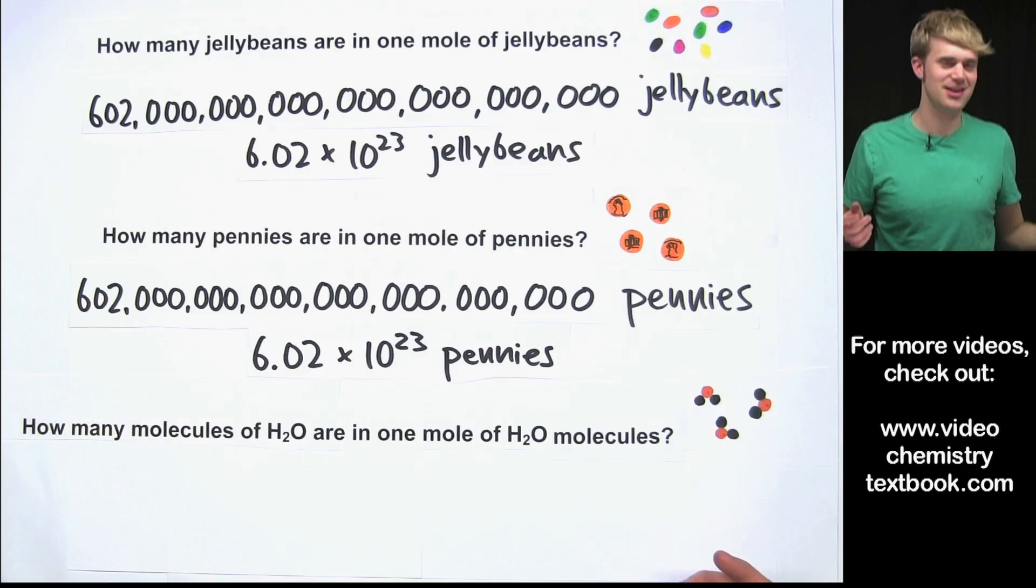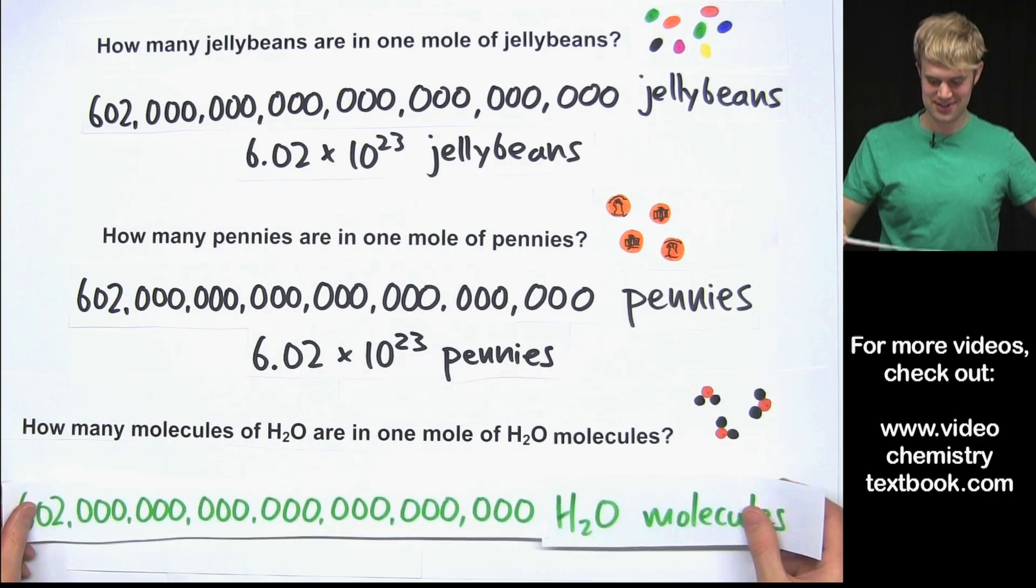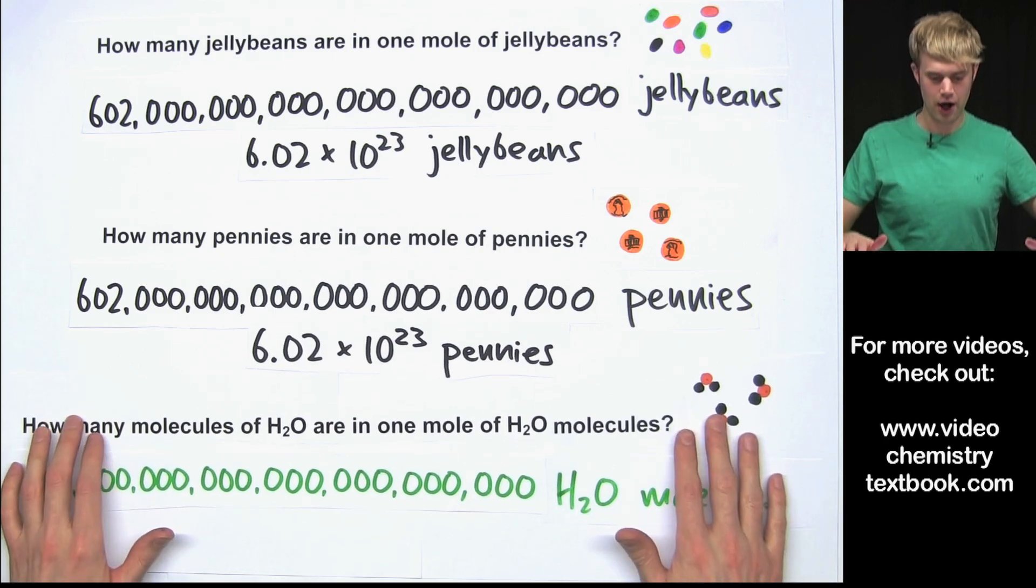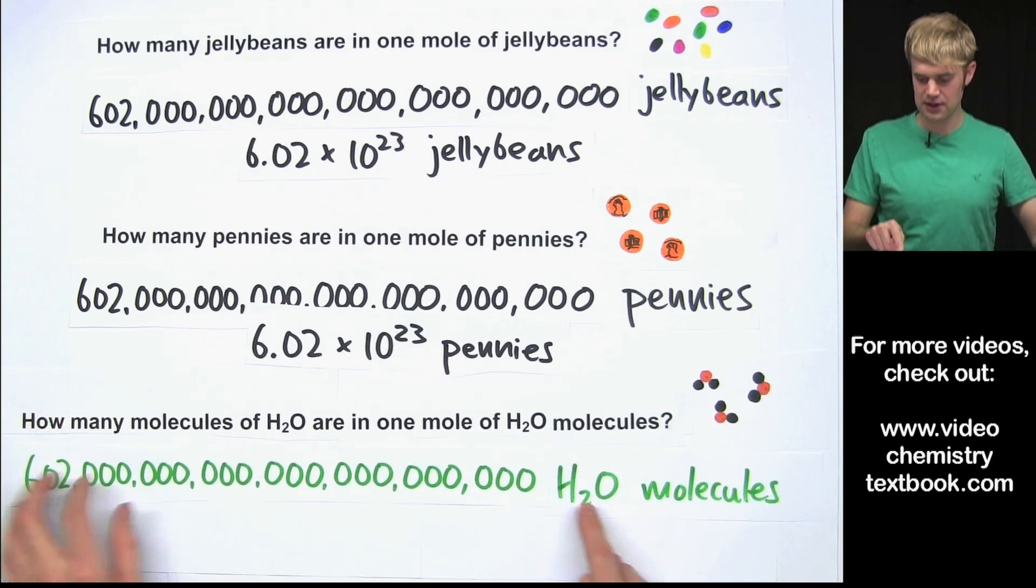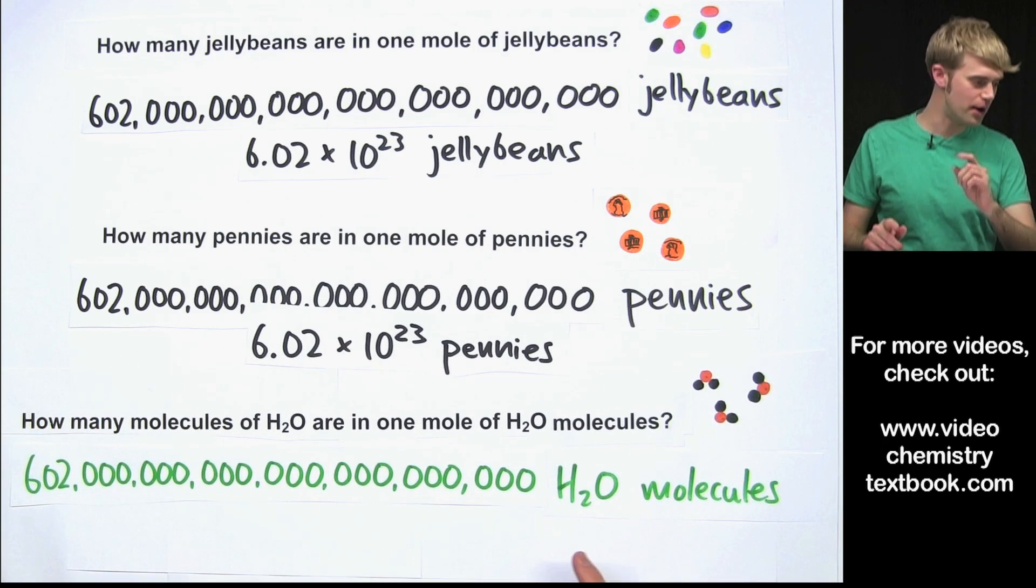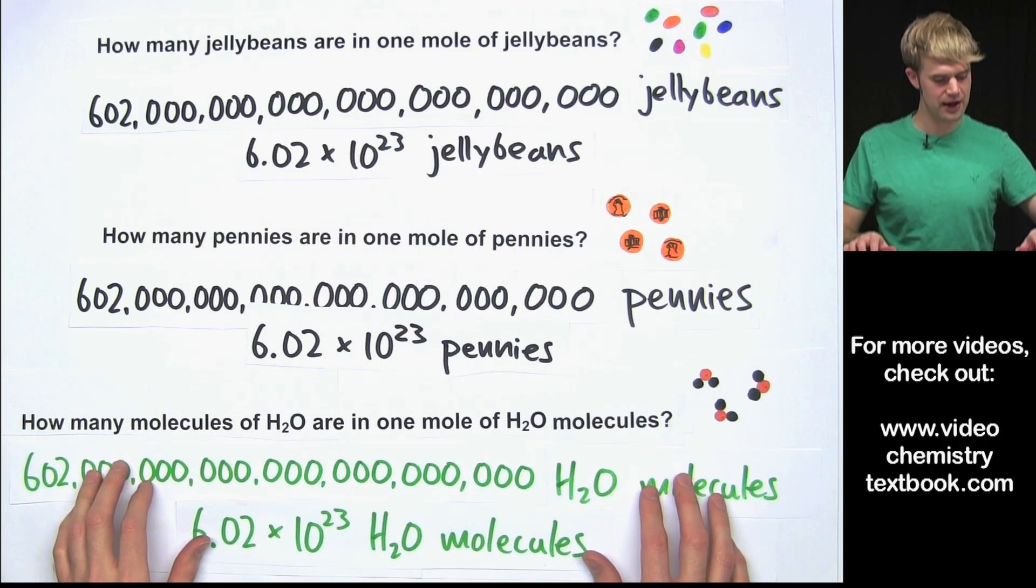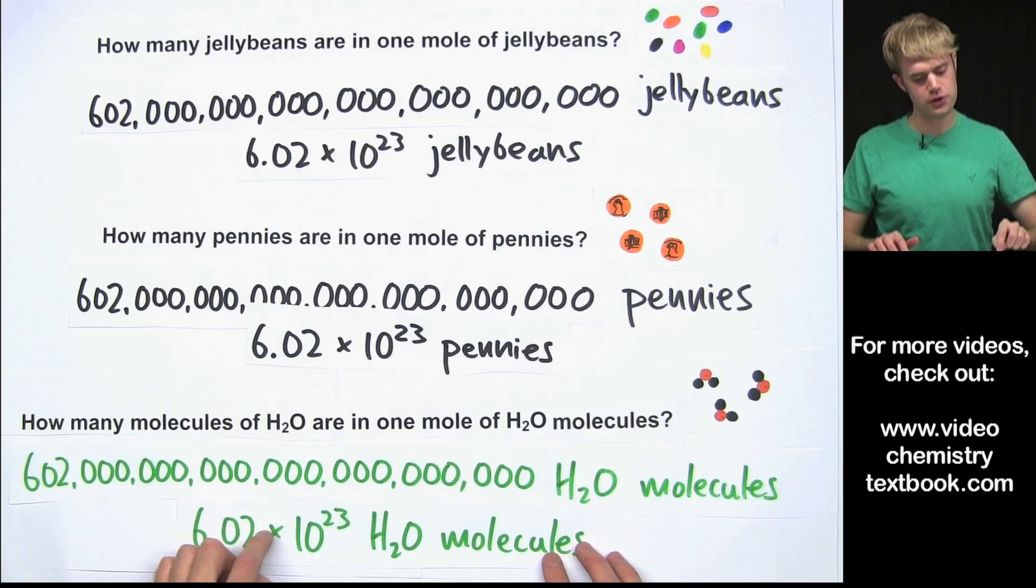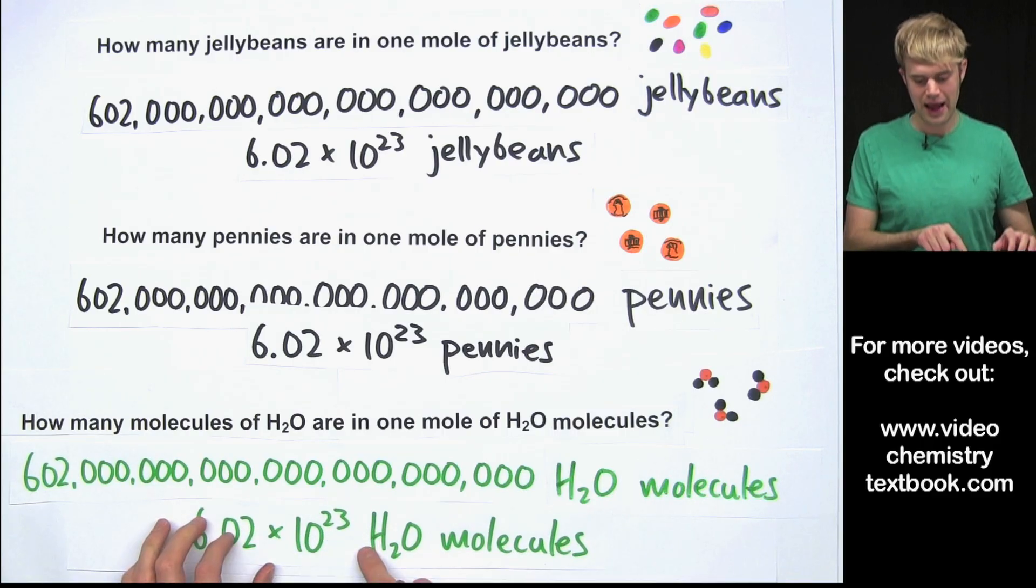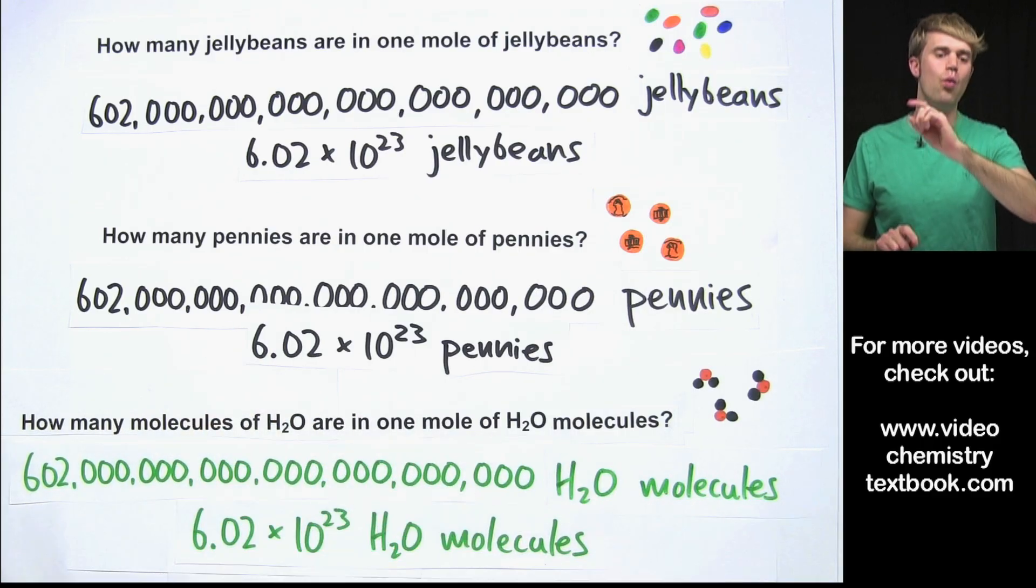Well, a mole is just another word for 602 hexillion things so there are 602 hexillion H2O molecules in one mole of H2O molecules or if we want to abbreviate it, there are 6.02 times 10 to the 23rd H2O molecules in one mole.